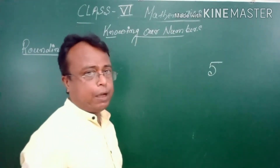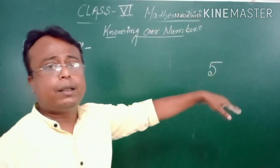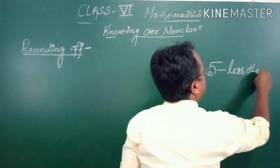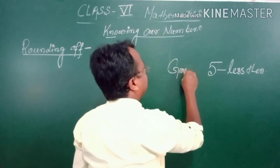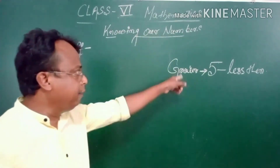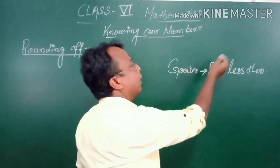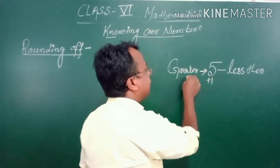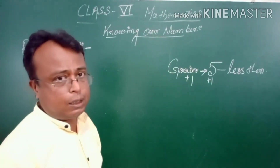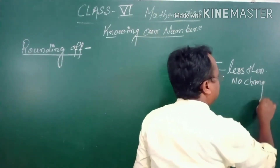Just now we learned about 5. Usually we round this 5 up. The rule is: if the digit is 5 or greater than 5, you add 1 — you round up. If it is less than 5, no sense — meaning no change.